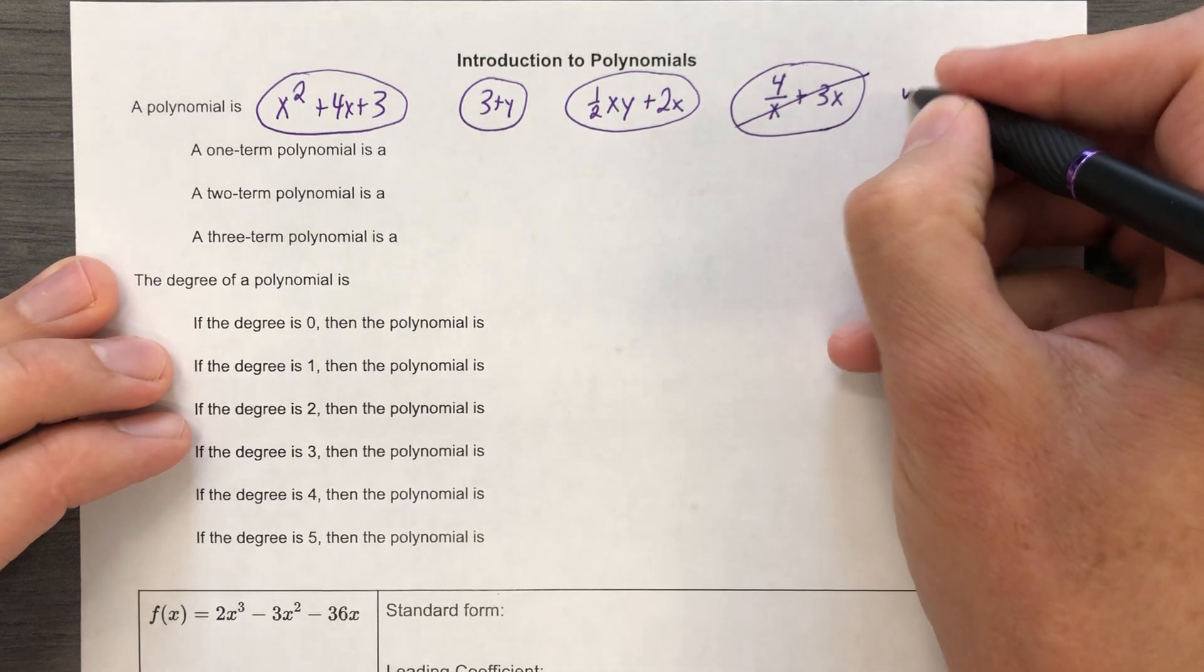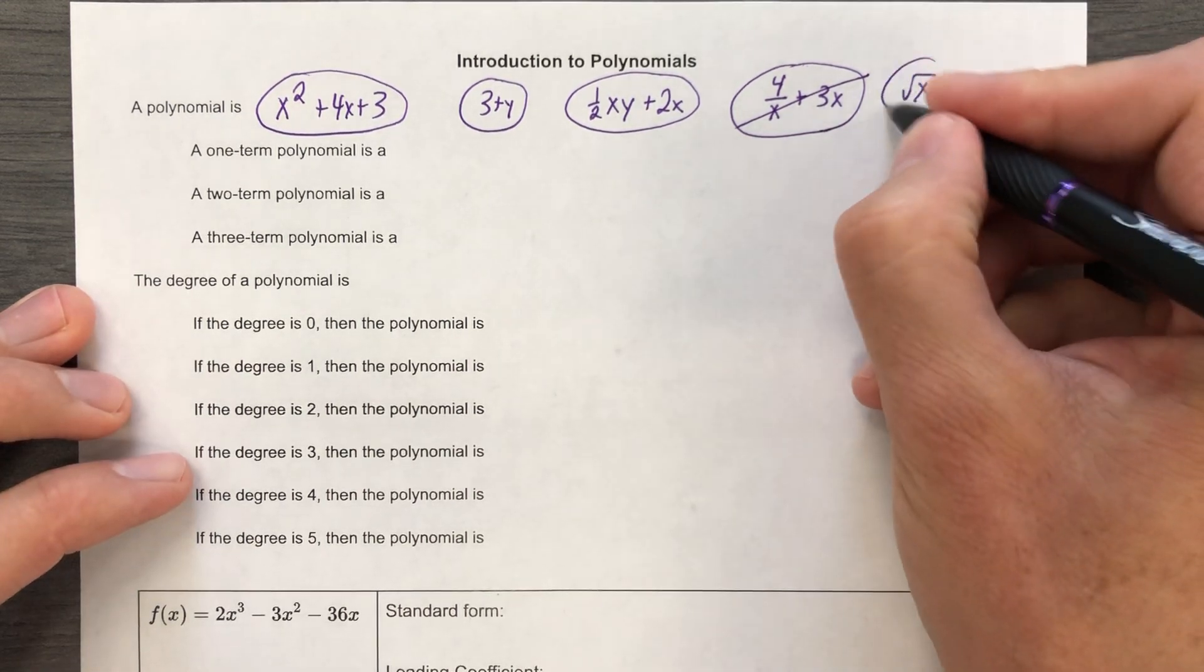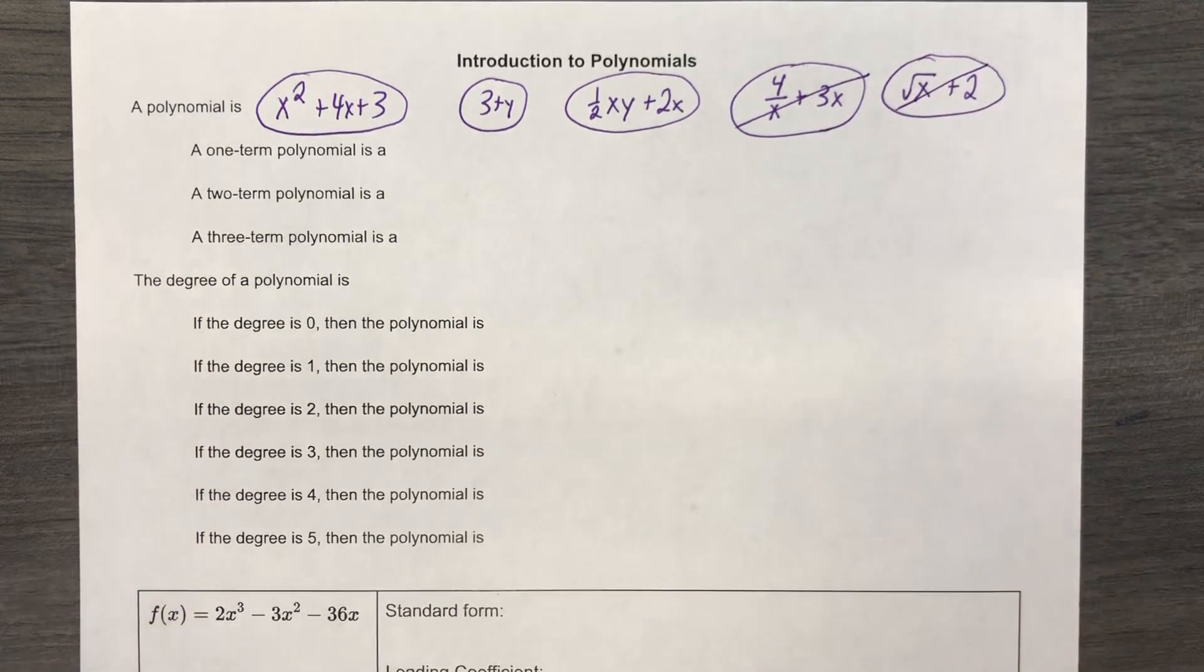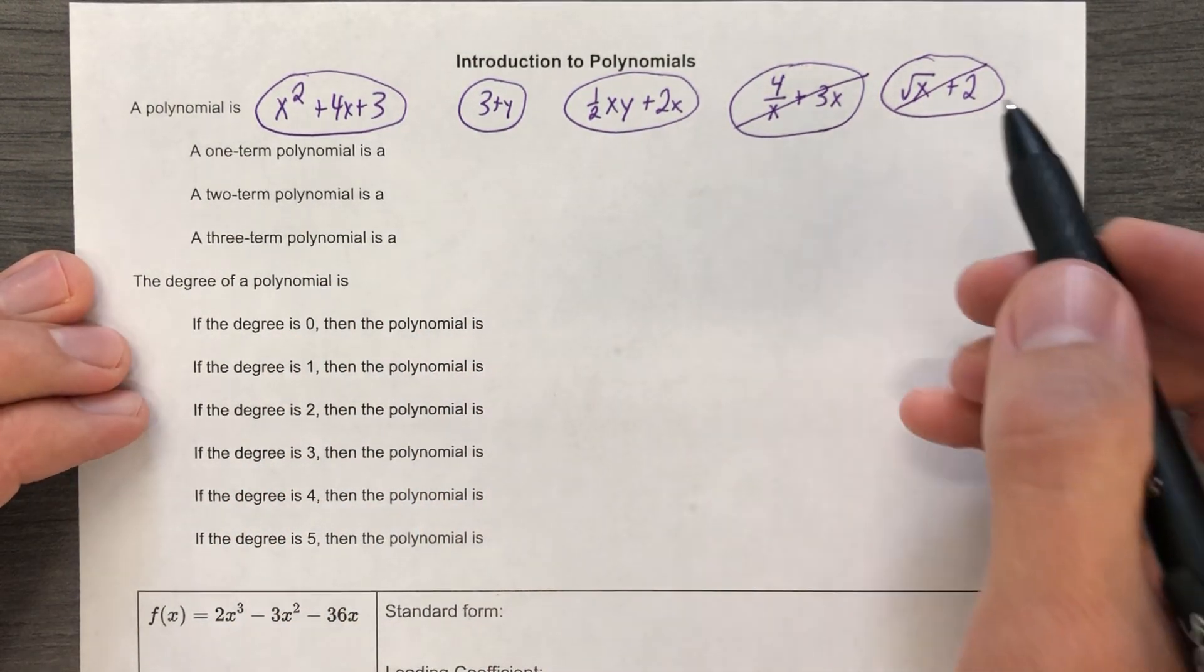And let's go one more. Square root of x and then plus 2. This actually would have an exponent of 1 half. So that is not a polynomial either. So polynomial, polynomial, awkward polynomial, not a polynomial, not a polynomial.